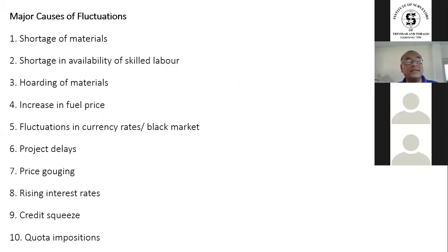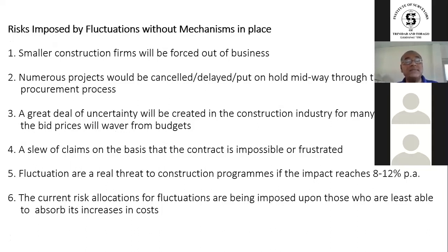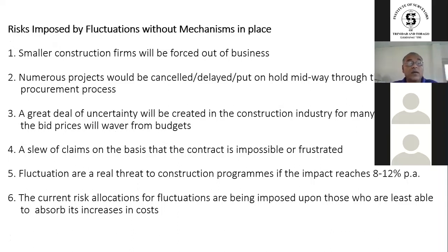You can see from that list that some of those things are already happening locally. The risk imposed by fluctuations without mechanisms in place: smaller construction firms will be forced out of business, numerous projects will be cancelled, delayed, or put on hold midway through the procurement process. A great deal of uncertainty will be created in the construction industry, as bid prices will waver from budgets. A slew of claims on the basis that the contract is impossible or frustrated. Fluctuations are a real threat to construction programs if the impact reaches 8% to 12% per annum or more.